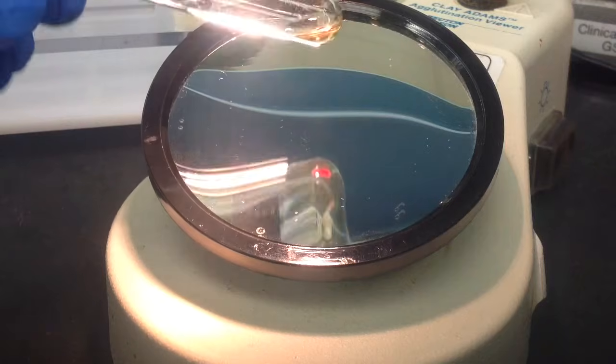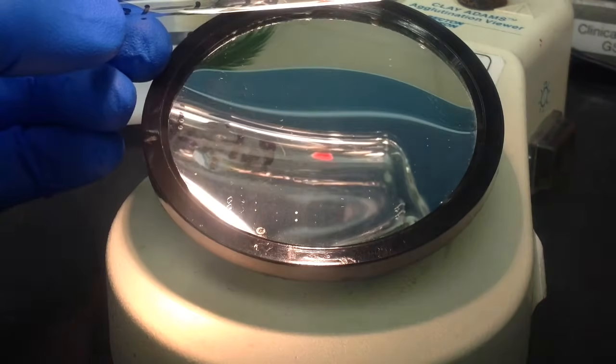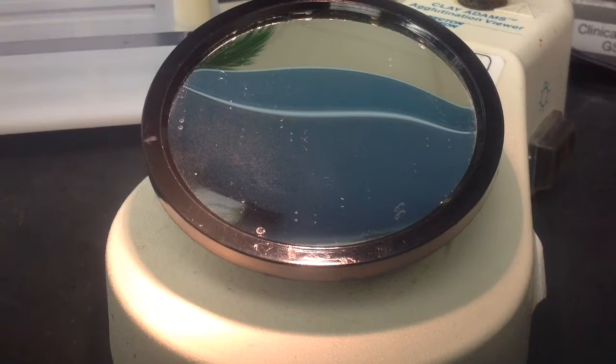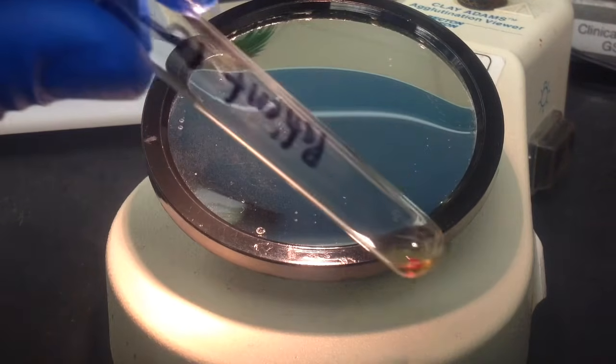And then with the reverse, both the A1 and the B reagent red cells are both 4-positives. And you can see that single cell button.